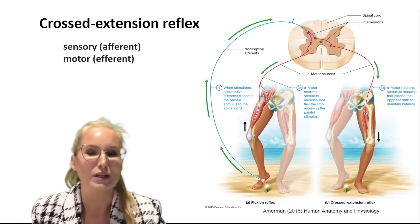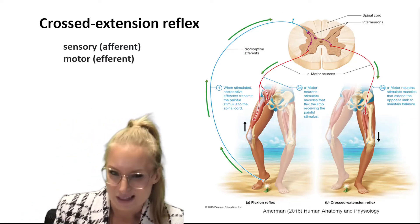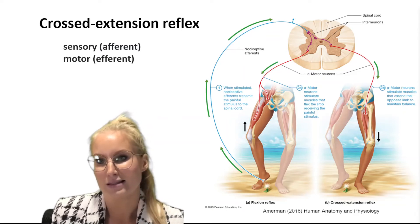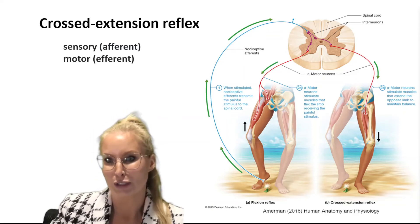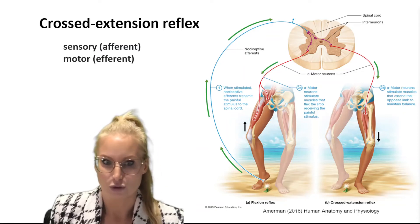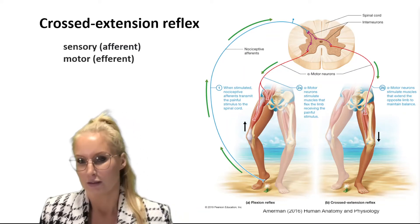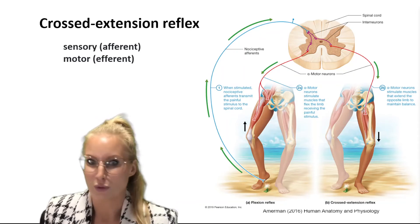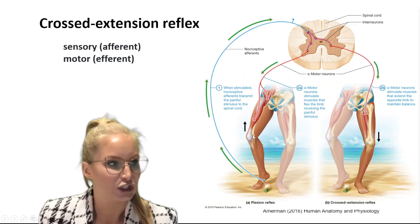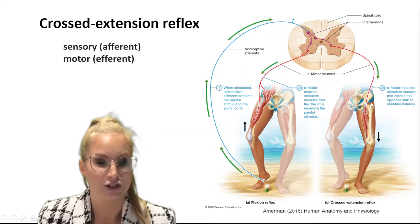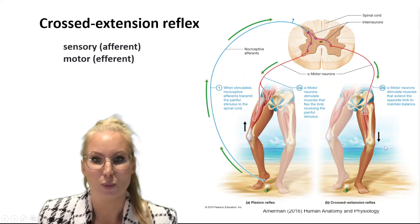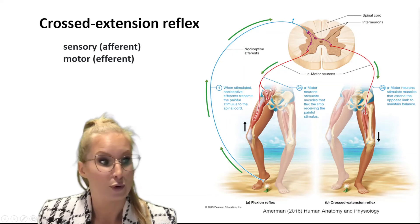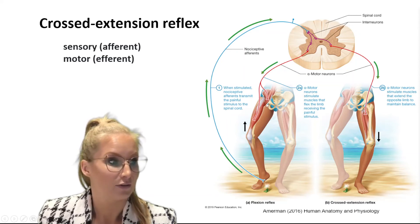There's also a second reflex happening at the same time called the cross-extension reflex. It triggers extension in the opposite limb to help preserve your balance so you don't topple over — if you're only lifting one leg, it creates an imbalance. So it triggers flexion in the leg receiving the stimulus and causes extension in the opposite limb. The integration center interneurons send signals to both sets of motor neurons, causing either flexion or extension.